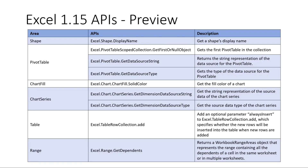We also have a couple more APIs around shape and table. These are based on customer requests. We have our M365 developer suggestions — which will be linked later in the presentation — where you can request features. We do look at that to help prioritize new additions to the API surface.